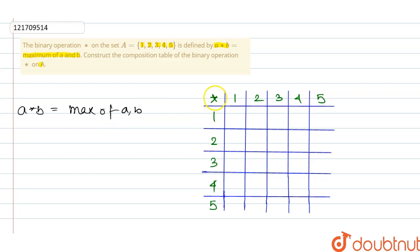So if we compute A composition B for each pair. We compute A composition 1, 2, 3, 4, 5 for each row. For example, 1 composition 1 equals 1, 1 composition 2 equals 1, 1 composition 3 equals 1, and so on, since the maximum of 1 with any value up to itself returns 1.